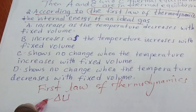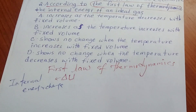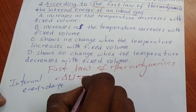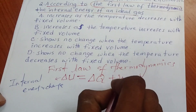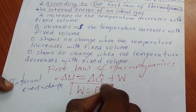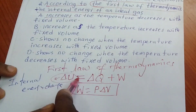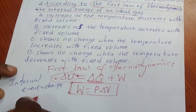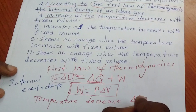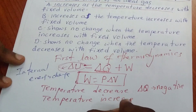Now, the first law of thermodynamics: changing internal energy is equal to changing heat plus work done. Work done is pressure times changing volume. At fixed volume, the change in volume is zero, so work done is zero.